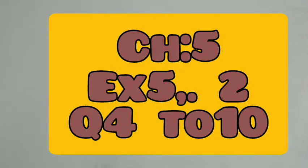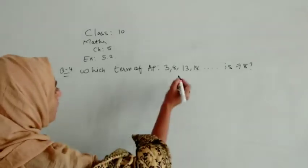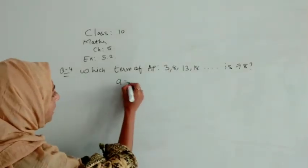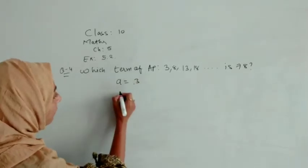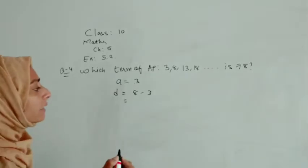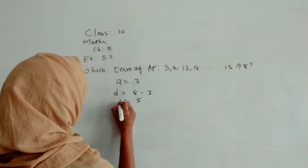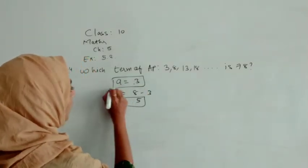Let's solve maths question number 4: which term of AP 3, 8, and so on is 78? To identify what is given, a is given as 3. The difference we will find: a2 minus a1, that is 8 minus 3, so it will be 5. So here we got a, we got d.